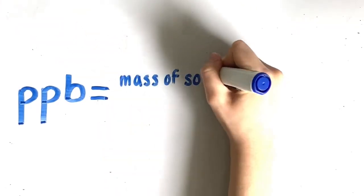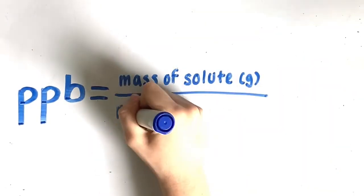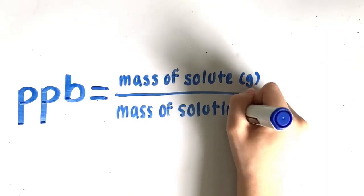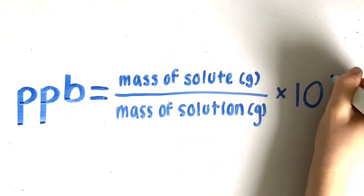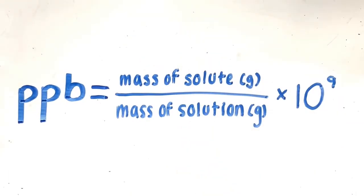The formula for parts per billion is PPB equals the mass of the solute in grams divided by the mass of the solution in grams multiplied by 10 to the power of 9. The reason we use 10 to the power of 9 is because it equals a billion.